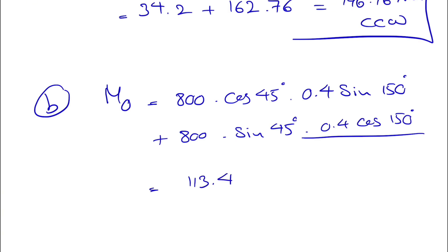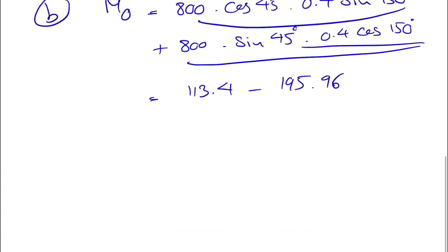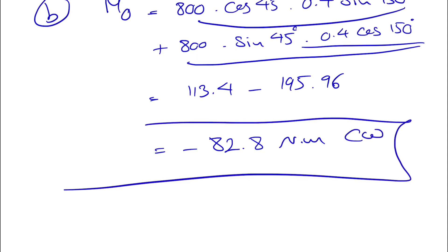So we get 113.4 from the first one, and for the second part we have 194, and I'm talking about this part, the second part, and this is the first part, 195.96, and this is going to give us minus 82.8 newton meters. And this time we have a negative sign which shows a clockwise moment, so basically we have another direction for our moment.